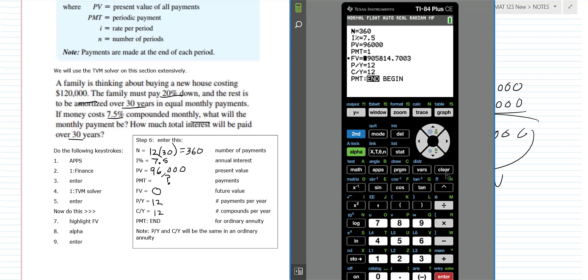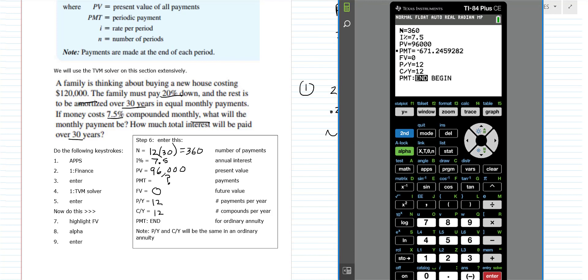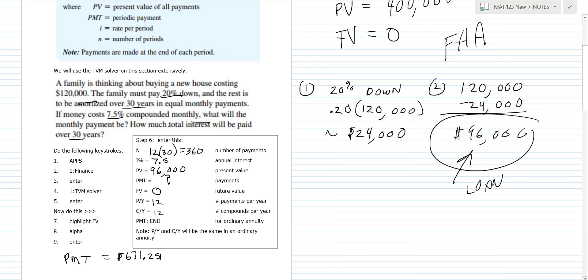I accidentally hit alpha solve on the wrong line and got a $905,000 result — that was the future value line by mistake. Go to the payment line and hit alpha solve. Payments come out as negative — don't worry about that, it's just how the calculator works. The payment is $671.25. That's how you use technology to figure out loan payments — car dealerships do the same thing on a computer.